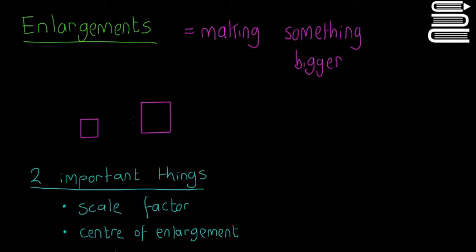For example here, we've enlarged the square. We've turned a small square into a bigger square. That's as basic as it gets. But you can't just randomly say this square is going to be bigger than that square. There are two things you need to consider.